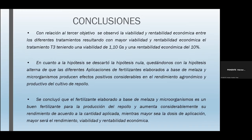Con relación al tercer objetivo, se observó la viabilidad y rentabilidad económica entre los diferentes tratamientos, siendo el tratamiento 3 el de mayor viabilidad —1,10 guaraníes— y rentabilidad del 10%. En cuanto a la hipótesis, se descartó la hipótesis nula y se quedó con la hipótesis alterna, que dice que las diferentes aplicaciones de fertilizantes elaborados a base de melaza y microorganismos producen efectos positivos considerables en el rendimiento agronómico y productivo del cultivo del repollo. Se concluyó que el fertilizante es bueno para la producción del repollo y aumenta su rendimiento considerablemente: a mayor dosis de aplicación, mayor rendimiento, viabilidad y rentabilidad económica.